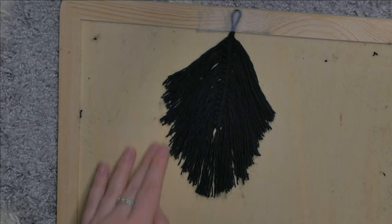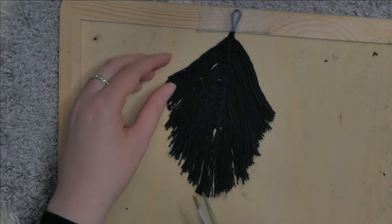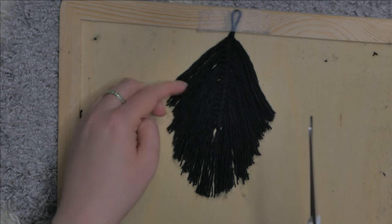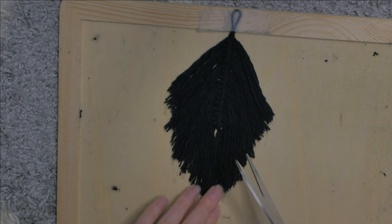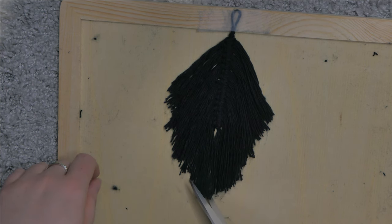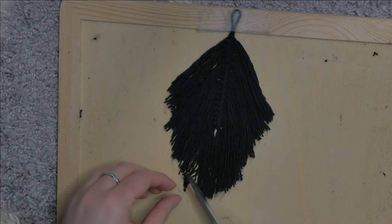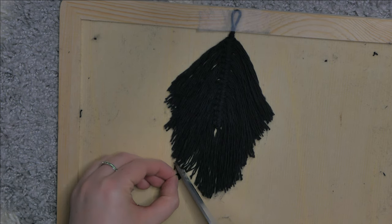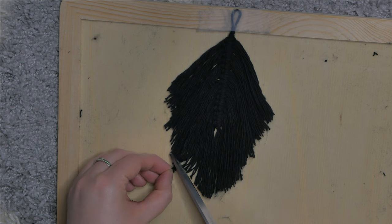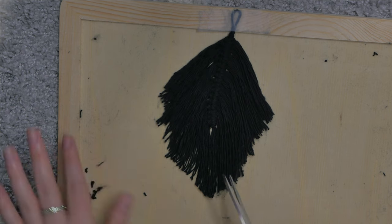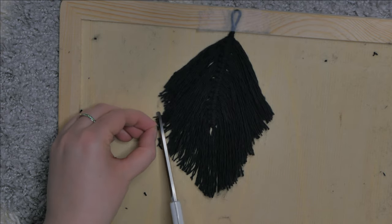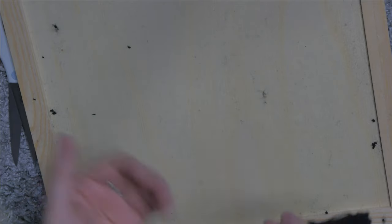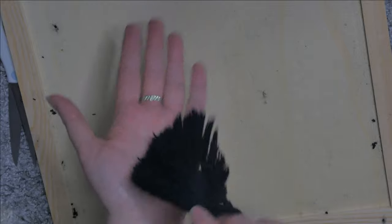So just continue to comb out your piece and trim it up if you think it needs it, and you can make this as round or as pointy as you would like. And here is your completed feather.